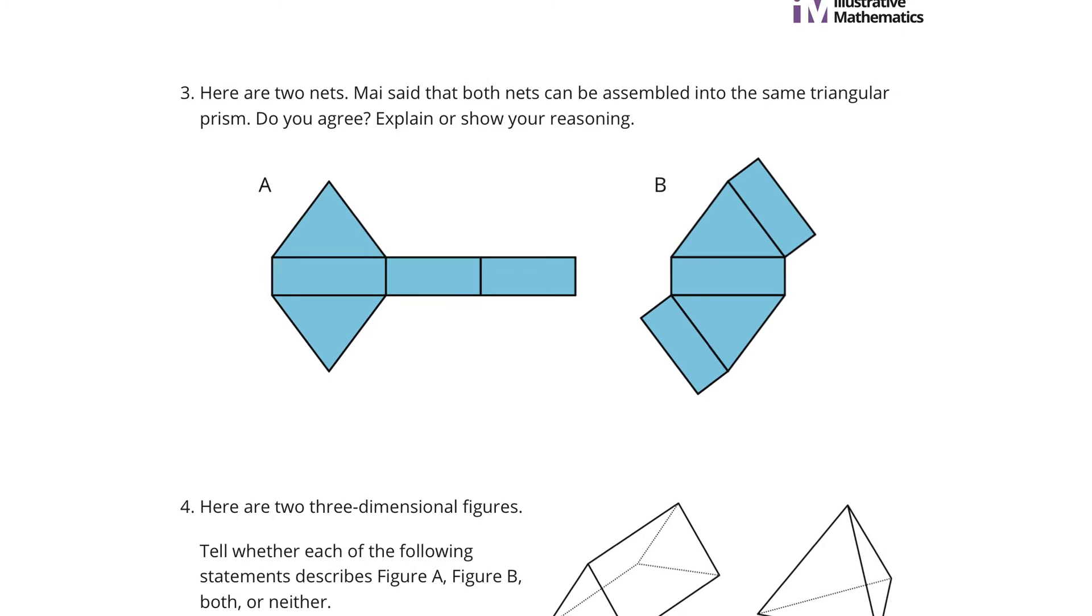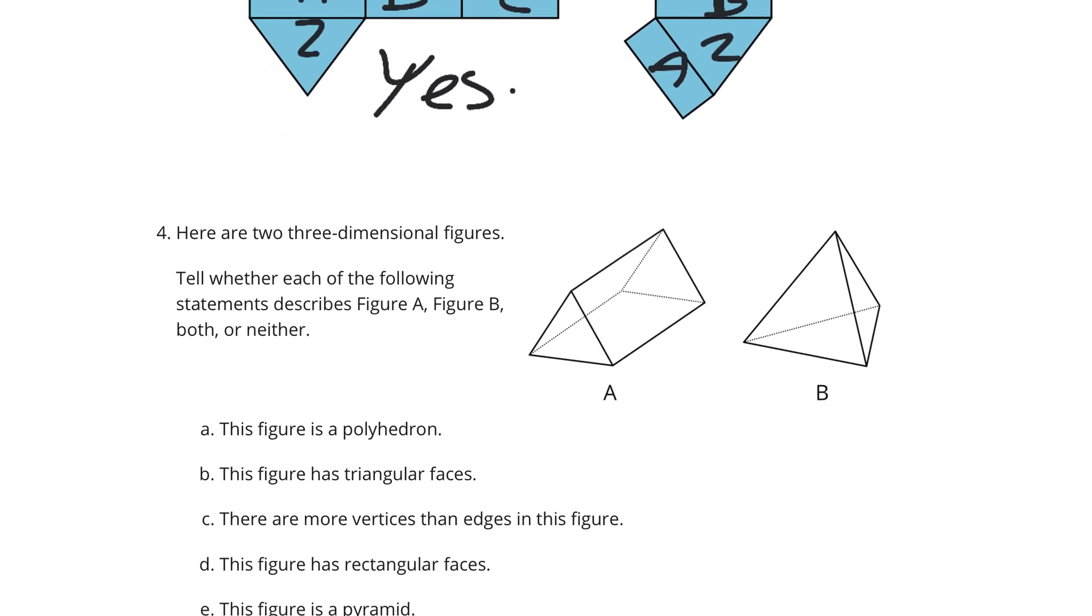Moving on to question 3. Here are two nets. May said that both nets can be assembled into the same triangular prism. Do you agree, explain, or show your reasoning? Well, we definitely have two triangular bases here. And they definitely match. And so if we move on to the rectangles, then A, B, and C, and A, and then can match A, B, and C in net B. And they can fold together, and they will form the same prism. So, yes.